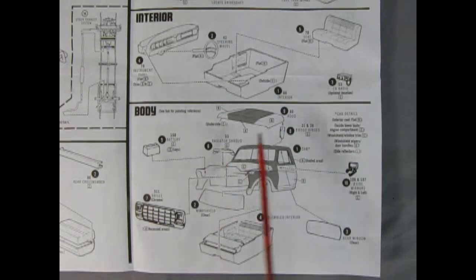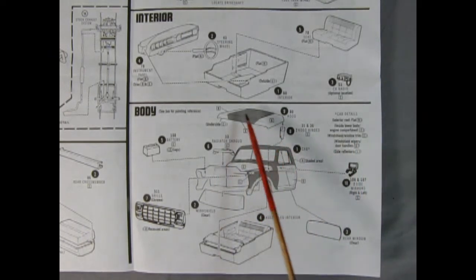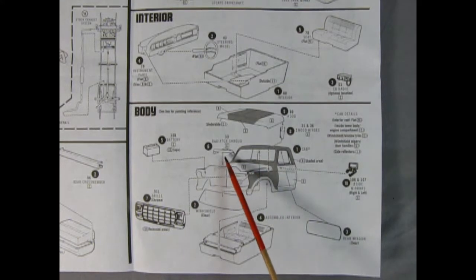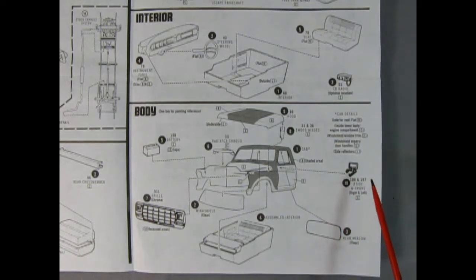Down below we have our body so we've got a separate hood, we've got our body as well, we've got these two nice hood hinges, a radiator shroud, a battery, the front grille and then our windshield and our back cab window as well as the two side mirrors and then our interior just pops up from underneath.